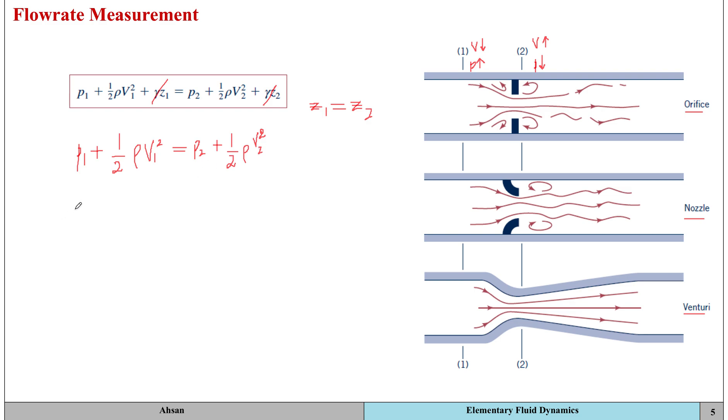Applying the continuity equation as well, we can write it as A1*V1 equals A2*V2. The area at section 2, because you place the restriction there, is going to be smaller than the area at section 1. Using both these equations we can simplify and find out the flow rate.